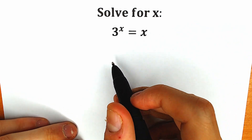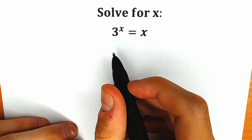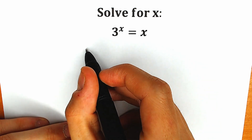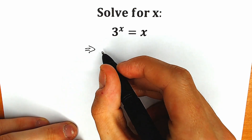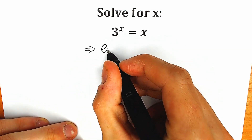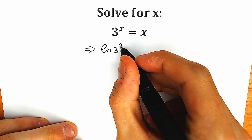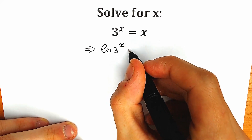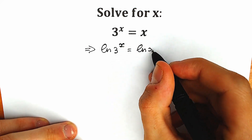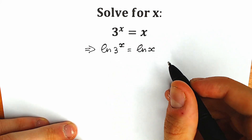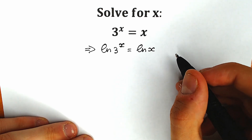How can you solve this question? First of all, let's apply the natural log on both sides. On the left side, we have the natural log of 3 to the power x, and we apply it on the right side as well — natural log of x. Right now we need to know a really great property.